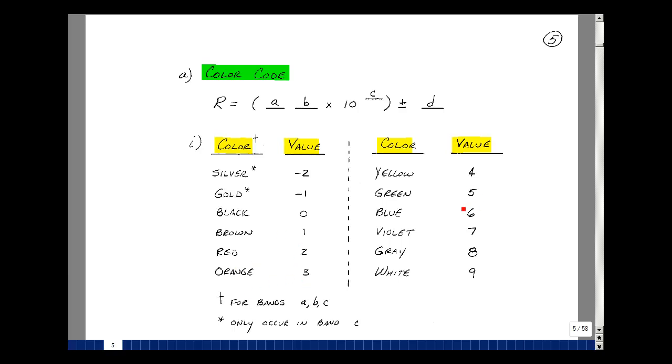Yellow is 4, green is 5, blue is 6, violet is 7, gray is 8, and 9 is white.